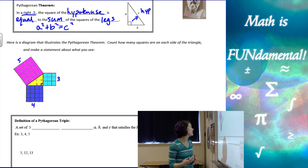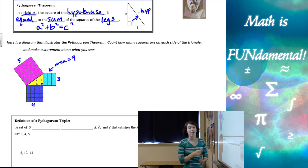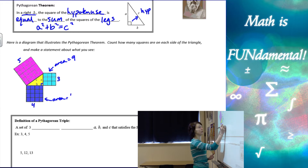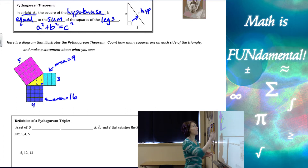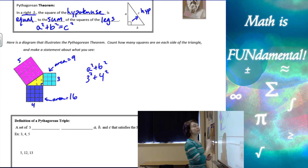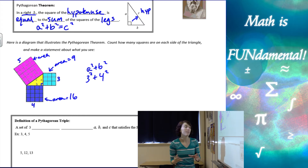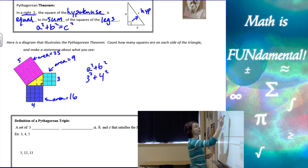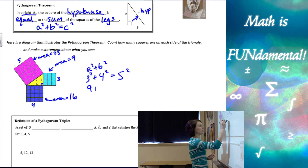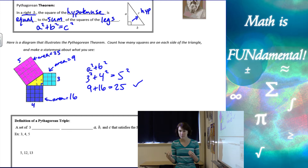What the Pythagorean Theorem says is that if I take a squared — the area of this square, which is 3 by 3, which is 9 — and the area of this square, which is 16, and add those together, I should get the area of the square on the hypotenuse: 5 by 5 is 25. So 9 plus 16 is 25, and that's what the Pythagorean Theorem means. It's really talking about areas.